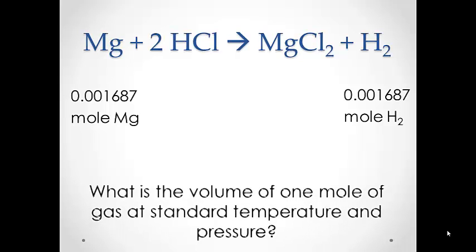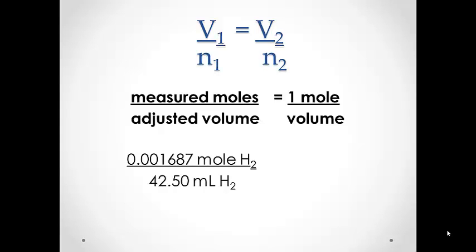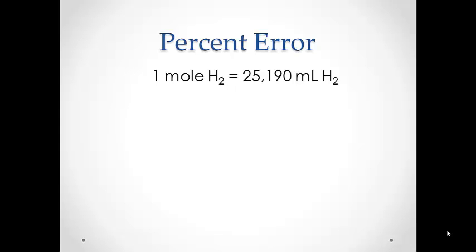Now we can get back to our original question: what is the volume of one mole of a gas at standard temperature and pressure? We have adjusted our measured volume to the volume at STP, and we have determined the number of moles collected in that volume. Since volume and the number of particles are directly proportional, we determine the volume of our gas if we were to have only one mole. In the end, we find that one mole of hydrogen gas has a volume of 25,190 milliliters. So according to our data, one mole of a gas at standard temperature and pressure will have a volume of 25,190 milliliters.